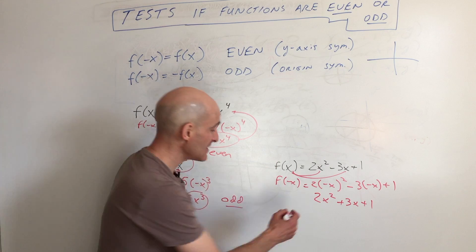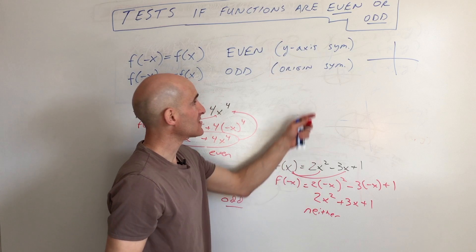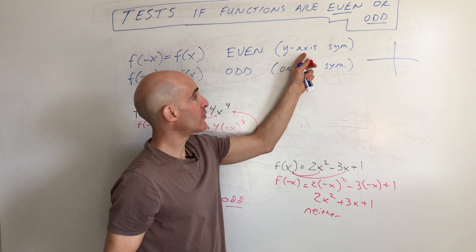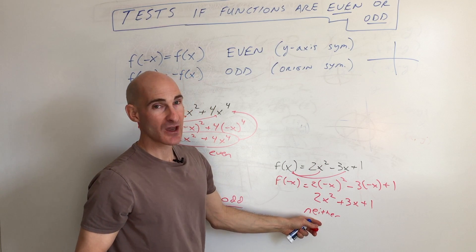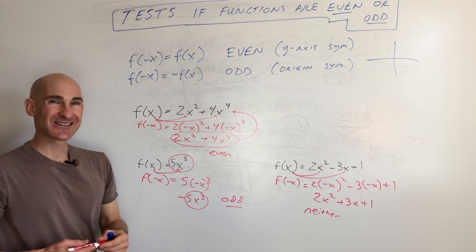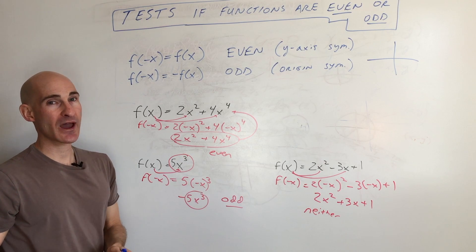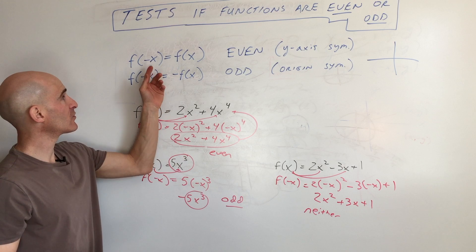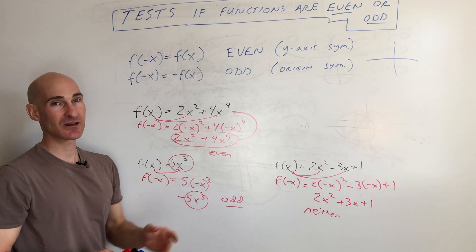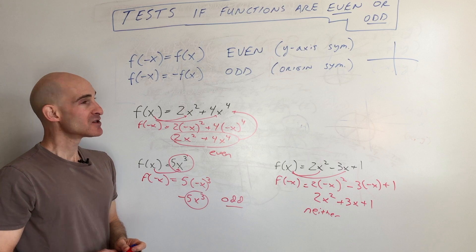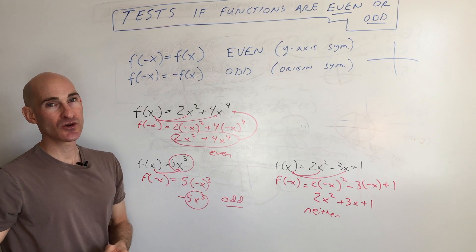So this falls into the neither category. It's neither even or odd, which means it's not symmetric about the y-axis. It's not a rotation about the origin. It's just neither. So these are the tests for even and odd. Similar in some ways to the symmetry tests we did for x-axis, y-axis, and origin. The approach is a little bit different. We're using the function notation, and we're substituting negative x into the equation. So go ahead and review this video if you need to. Otherwise, I'll see you in the next video.